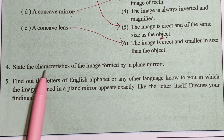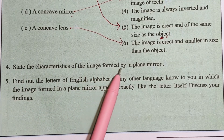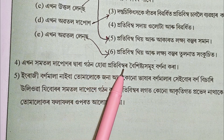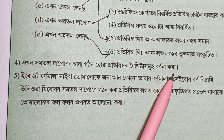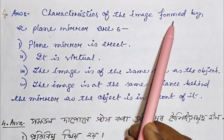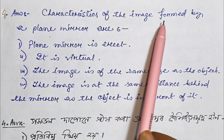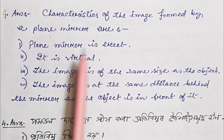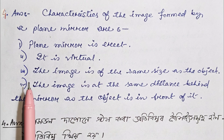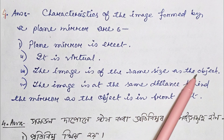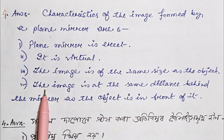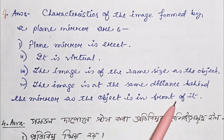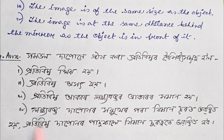Question number 4: State the characteristics of the image formed by a plain mirror. The characteristics are: Number 1 — the image is erect. Number 2 — it is virtual. Number 3 — the image is of the same size as the object. Number 4 — the image is at the same distance behind the mirror as the object is in front of it.